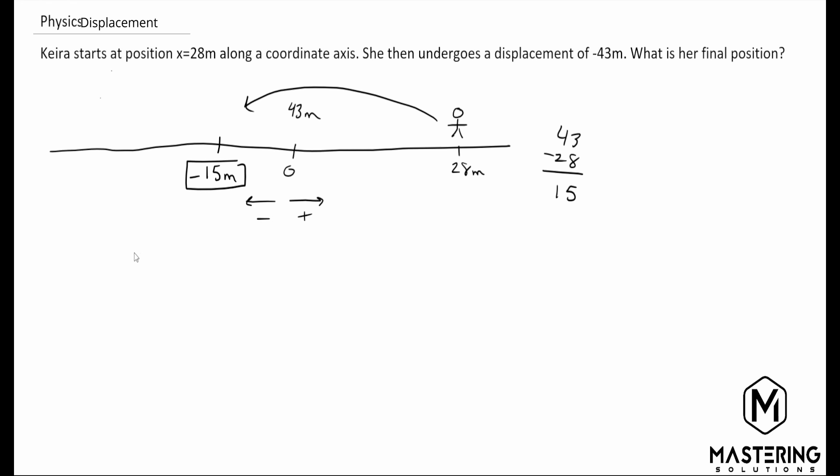Another way to think of this problem is the delta x equation or the displacement equation. So delta x, anything delta of course is final minus initial. So we have x final minus x initial. So what we're looking for is the x final. We know the delta x is 43 meters and we know that they started on the 28 meter line. So if we rearrange this equation by adding x initial that goes away and then we're left with x final equals delta x plus x initial.